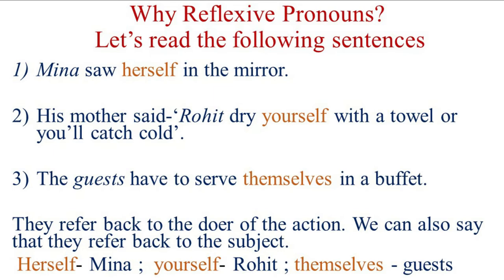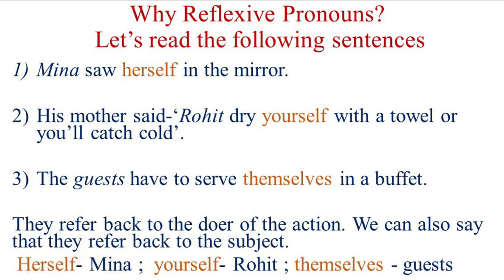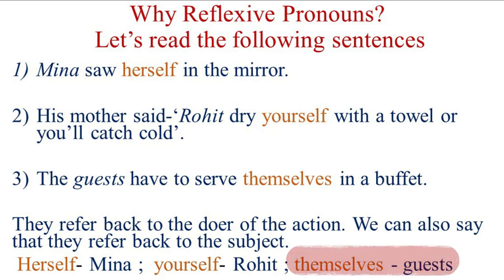Now let us come to the reflexive pronouns. You notice three words — herself, yourself, and themselves — in the sentences you have just read. These words are called reflexive pronouns because they refer back to the doer of the action, that is, the subject performing the action. In 'Meena saw herself in the mirror,' herself refers back to Meena. In 'Rohit, dry yourself,' yourself refers back to Rohit. And themselves refers back to the guests. So the reflexive pronoun refers back to the doer of the action in the sentence.